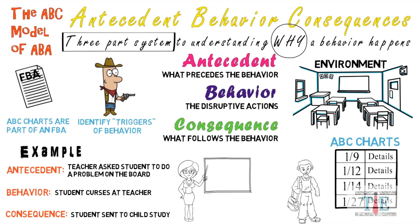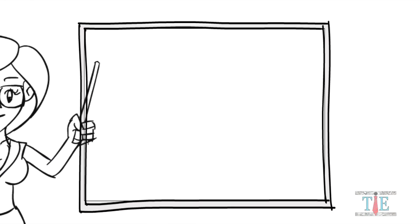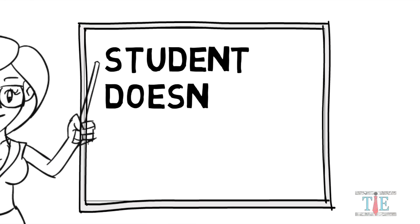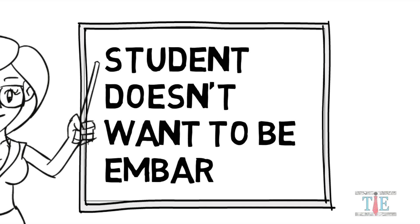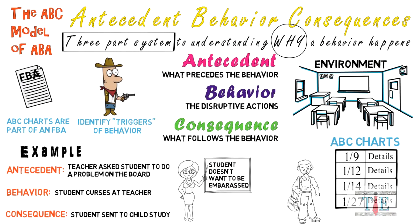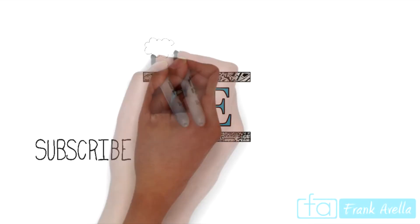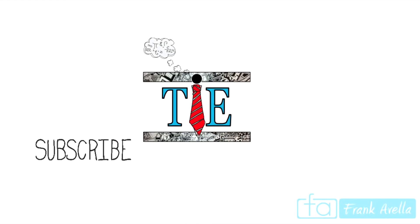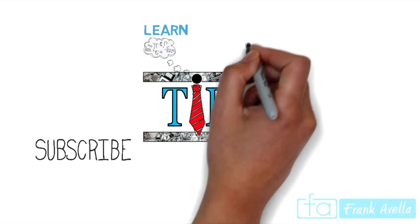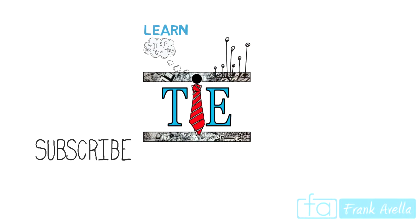In the example given, it is reasonable to suggest that the student cursed out the teacher because he didn't want to be embarrassed. However, further details may lead to a different conclusion, so this must be studied. Thank you for your time, and do not forget to subscribe to this channel.